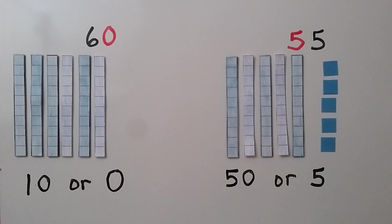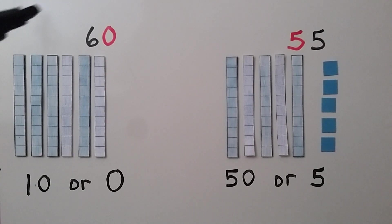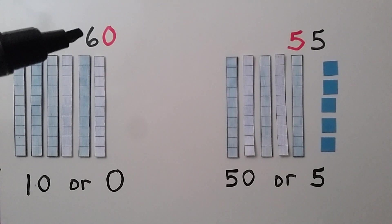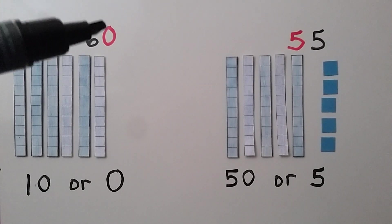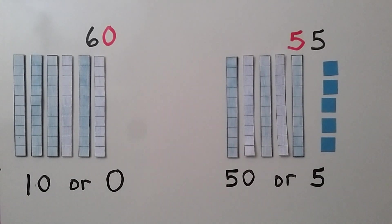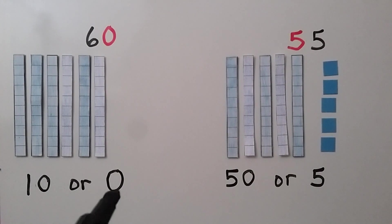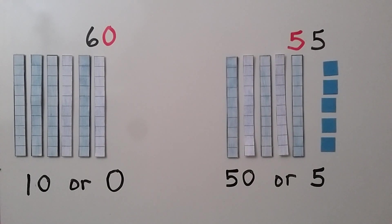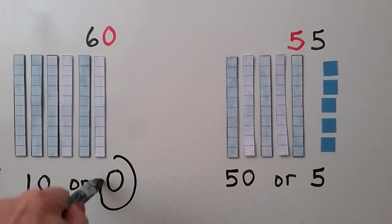We need to circle the value of the red digit, and the red digit is the 0. We have a 6 in the tens place and a 0 in the ones place. Does the 0 represent a 10 or a 0? If you said 0, you're right — it represents 0 ones.